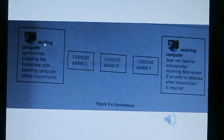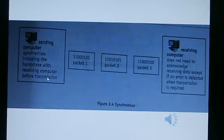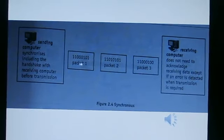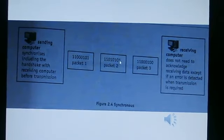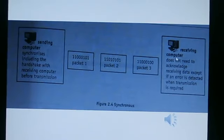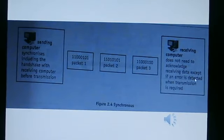This is for the synchronous sending computer, synchronizer including the handshake with receiving computer transmission. Then we send the data. Package 1 includes 11000101. Package 2 includes 11000101. Package 3 includes 11000100. So that the receiving computer does not need to acknowledge receiving data; if an error is detected, retransmission is required.